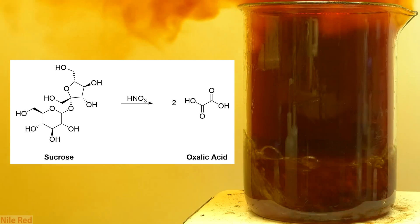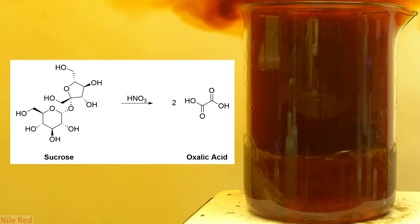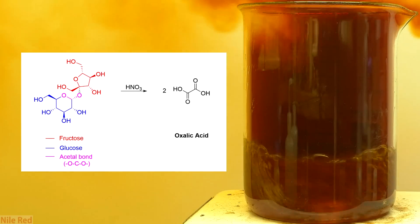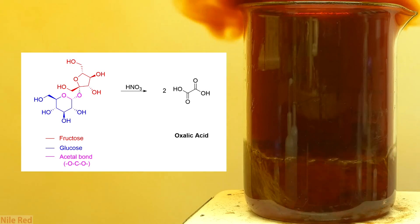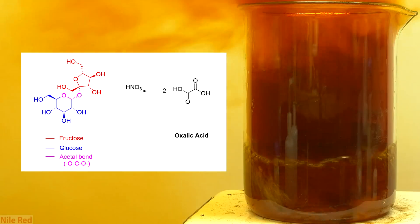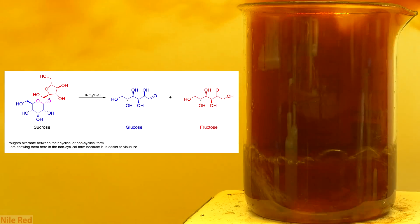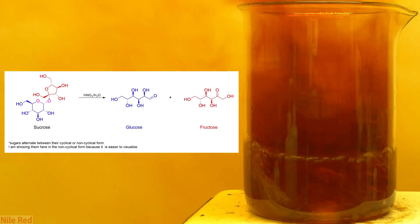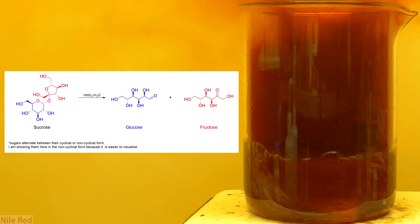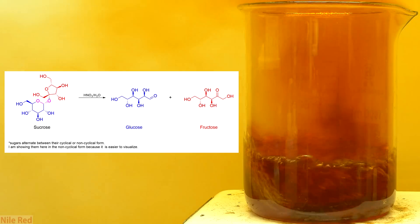Sucrose here looks large and complicated and this is because it's a disaccharide, which means that it's a sugar consisting of two smaller sugar units. The two smaller units of sucrose are glucose and fructose, and they're connected together by an acetal bond. Under the acidic conditions that we have here, the acetal bond is easily hydrolyzed and we liberate the fructose and glucose monomers.